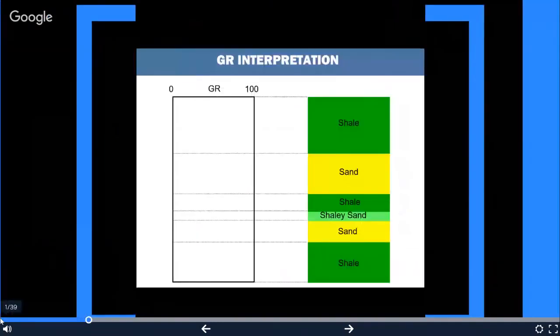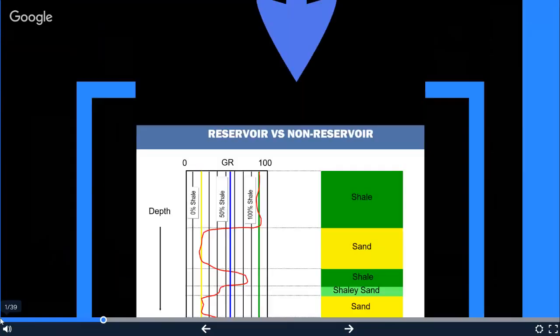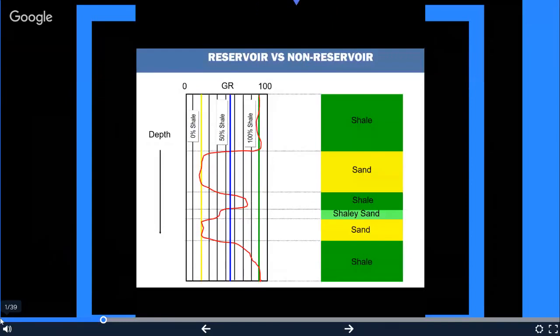Let's see how GR logging tool will respond to the following lithological column, which include shale, sand, and shaley sand. The maximum GR value will be on the shale, while the minimum will be on the sand, and the mid one on the shaley sand.